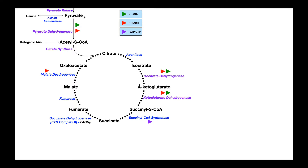Recall we talked about glycolysis — it's a 10 enzymatic step pathway that converts glucose into pyruvate, technically two molecules of pyruvate per molecule of glucose. Now pyruvate is going to enter the mitochondria where we have both the citric acid cycle (also called the Krebs cycle or TCA cycle) and oxidative phosphorylation. Once there, we have this enzyme called pyruvate dehydrogenase complex that's going to convert pyruvate into the central coenzyme here, acetyl-CoA.